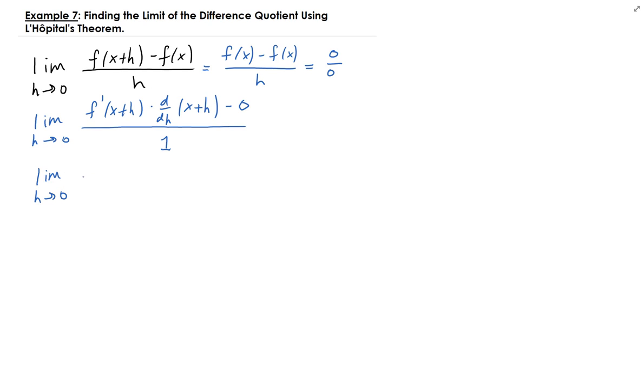So f prime of x plus h times the derivative, the derivative of x plus h with respect to h is just 1. And then minus 0, and then divide by 1.